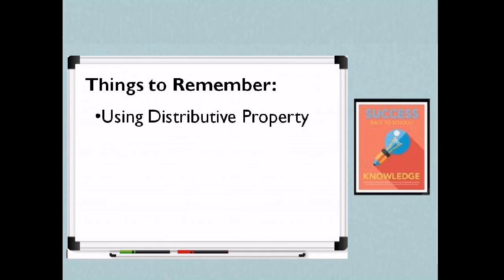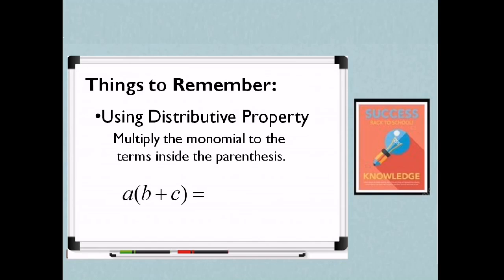Things to remember using distributive property. So we can multiply polynomials by using the distributive property. Multiply the monomial to the terms inside the parentheses. Example, A times the quantity B plus C. So we are going to multiply the monomial A to the binomial B plus C inside the parentheses. That is, A times B is AB plus A times C is AC. The product is AB plus AC.